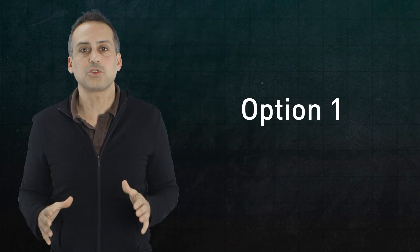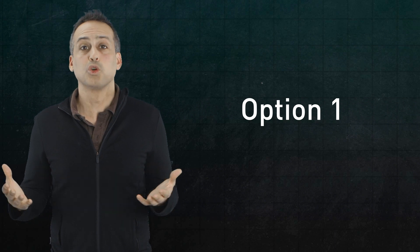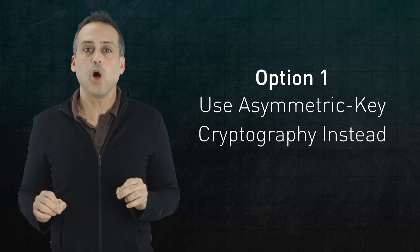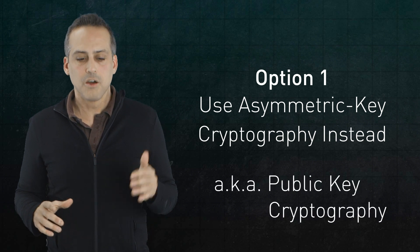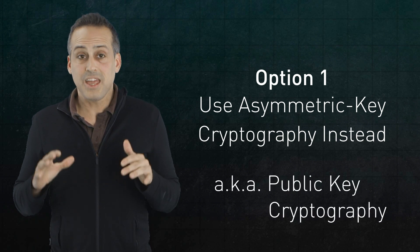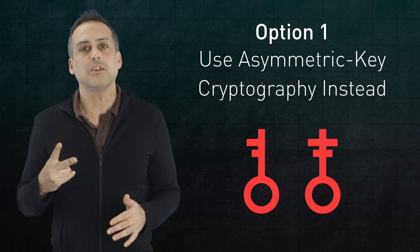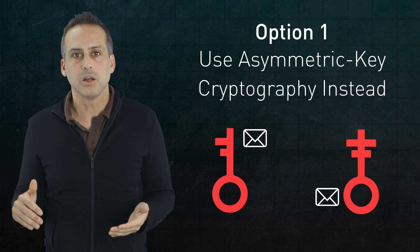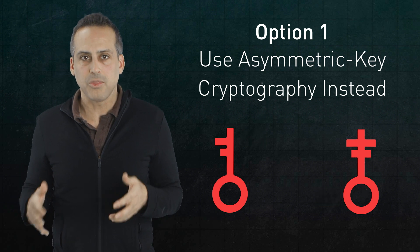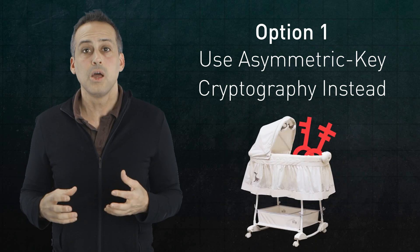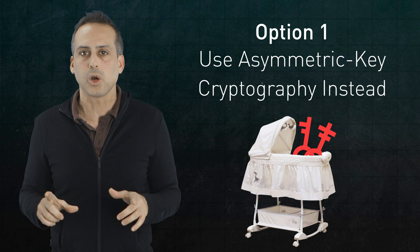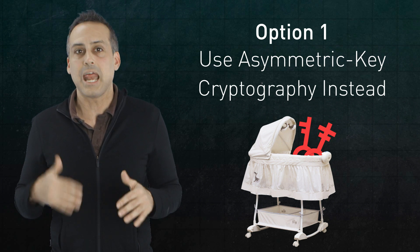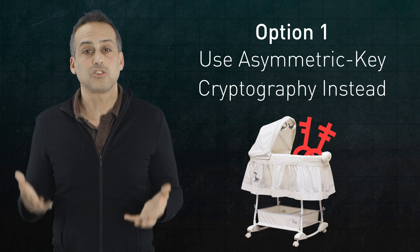Option one for sharing a symmetric key is don't do it at all. Instead, use asymmetric key cryptography, also known as public key cryptography, for reasons that will be clear in a moment. The idea here is to use two keys with the property that anything encrypted with one of them can only be decrypted by the other. Now, to work as I just described, these keys will have to be related somehow. And we'll come back to how they're generated shortly. But for now, let's just assume these key pairs exist and outline the steps used to communicate securely with them.